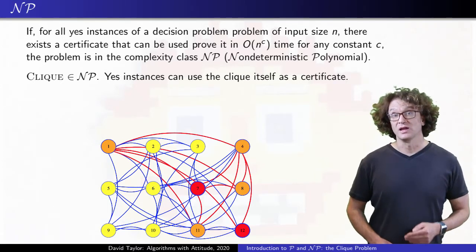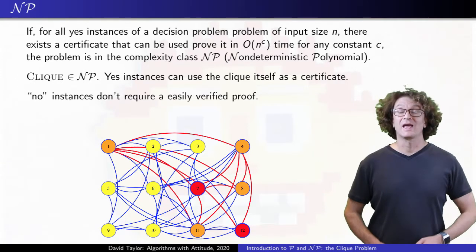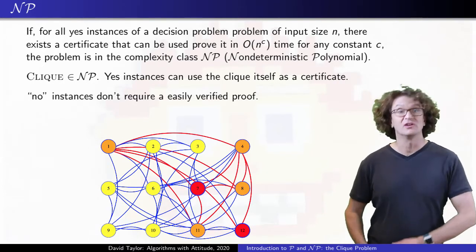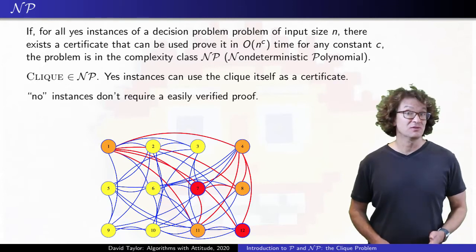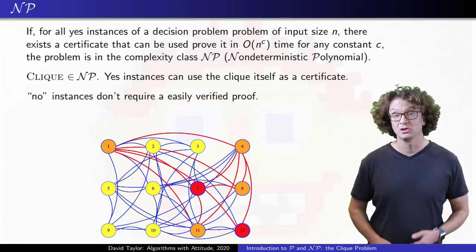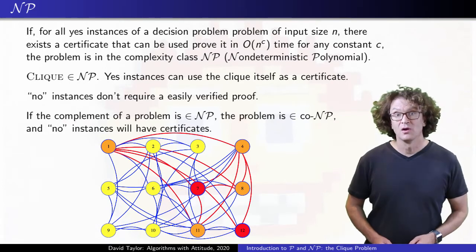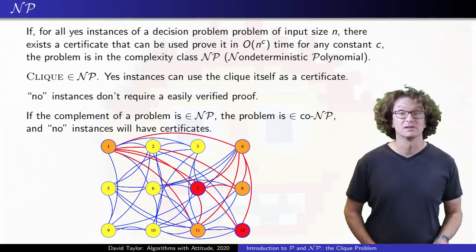For instances with a no answer, you don't need a proof, but your verifying algorithm can't ever be tricked into verifying that a no instance is a yes instance. If you have a decision problem where negative instances have proofs that can be verified in polynomial time, but you don't need a proof for yes instances, those problems are in the complexity class co-NP. Their complement is in NP.